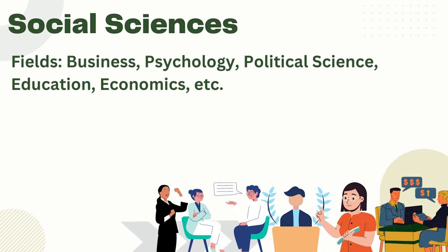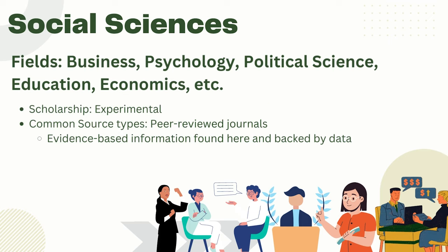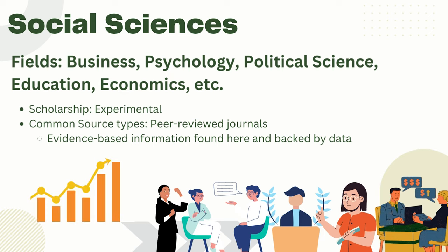Social sciences include a wide variety of fields including business, psychology, political science, education, economics, and others. Many researchers in these fields rely on evidence-based information to inform their own research or decision-making. This kind of information is usually found in scholarly journal articles in which the research is backed by data.